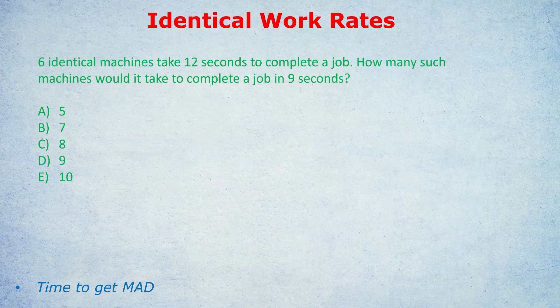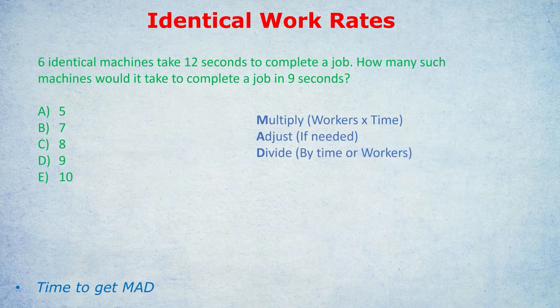We're always going to follow the same three steps, always in the same order. I call it the MAD method — Multiply, Adjust, Divide. Always the same three steps: Multiply, Adjust, Divide.